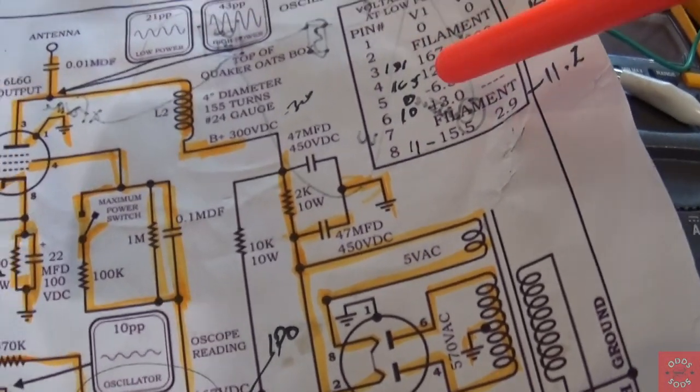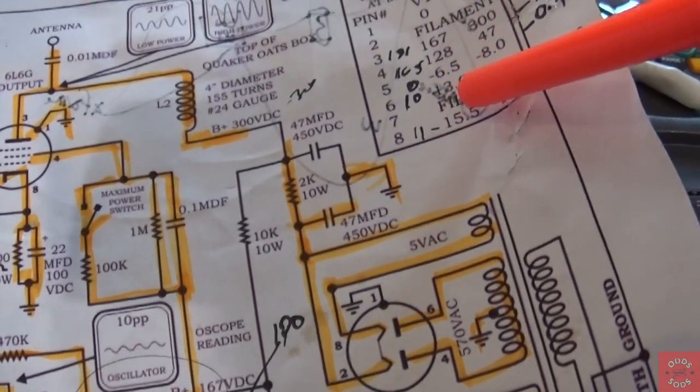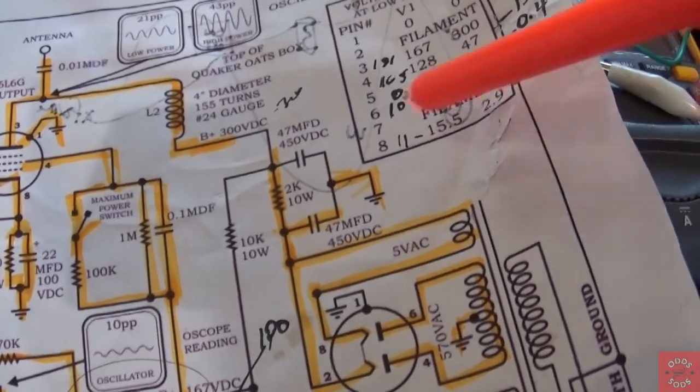Similarly, on pin 6, I'm supposed to have 13 volts and I have 10. And on pin 8, I'm supposed to have 15.5 and I have 11.